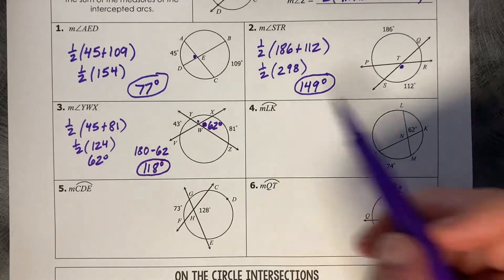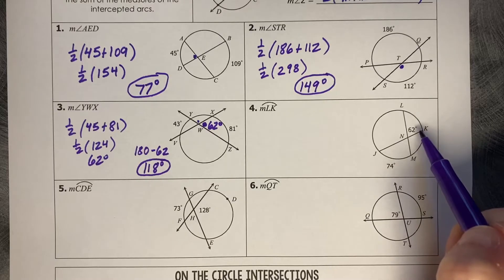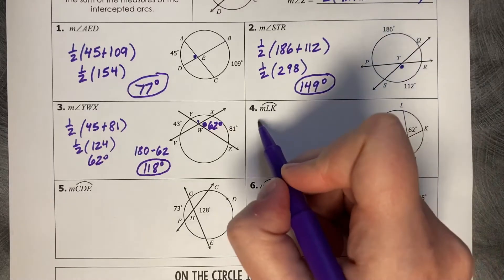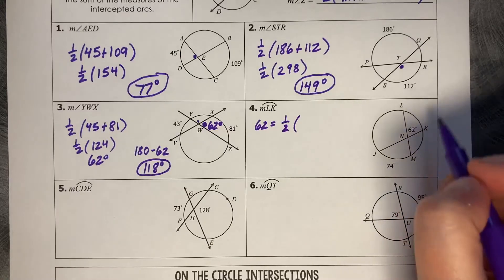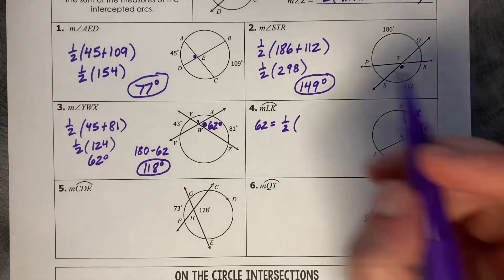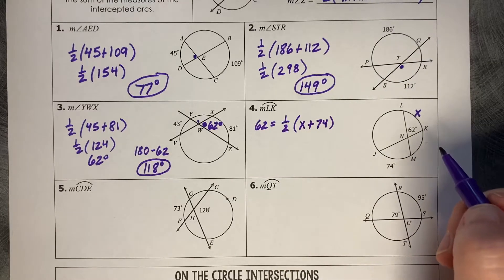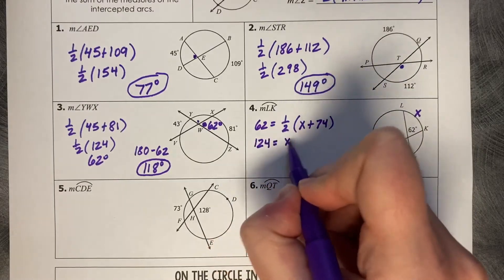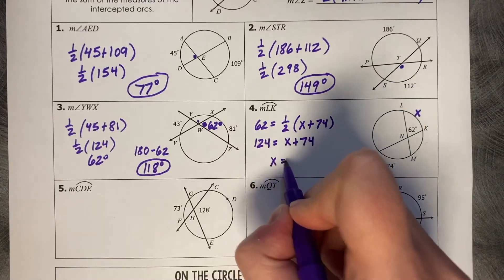The measure of arc LK. LK corresponds to 74, and we also have its interior intersection angle measure of 62 degrees. Setting up the equation: 62 equals one half of X plus 74. Multiplying both sides by 2 gives 124 equals X plus 74, minus 74, so X equals 50 degrees.